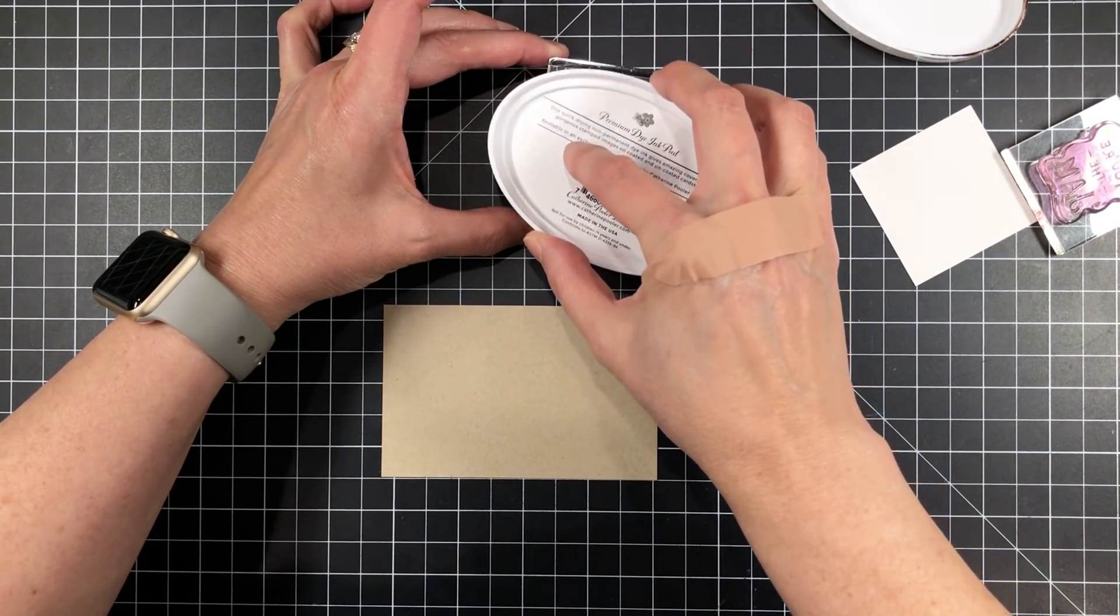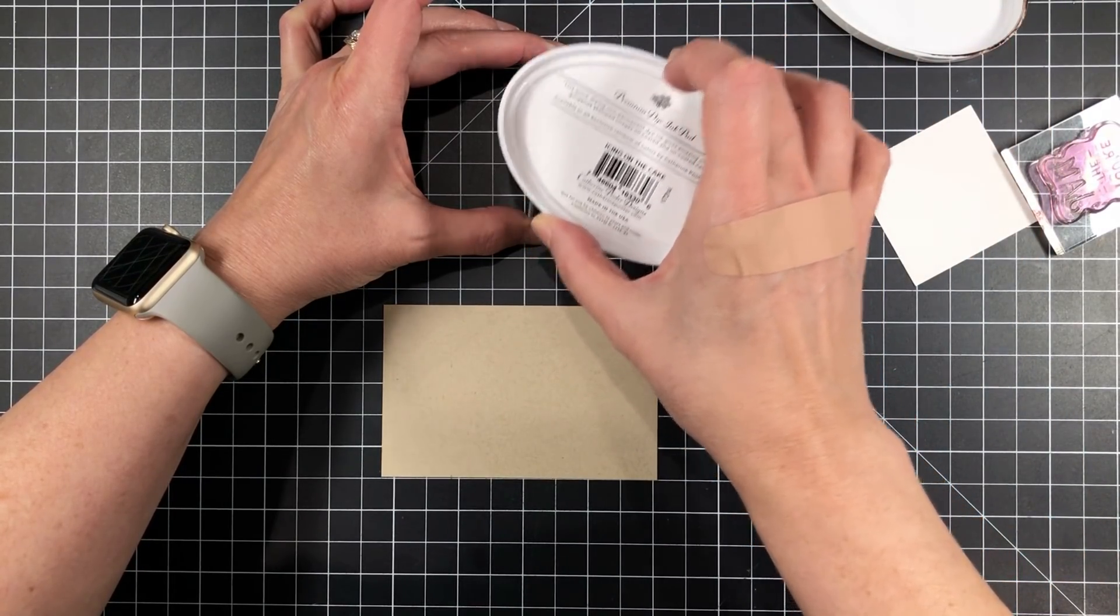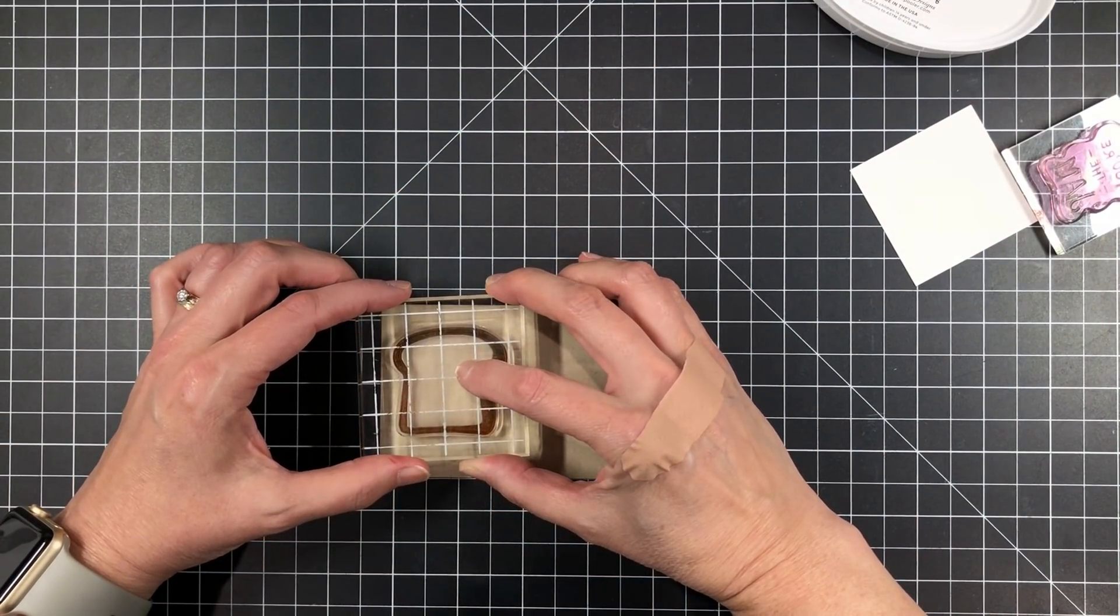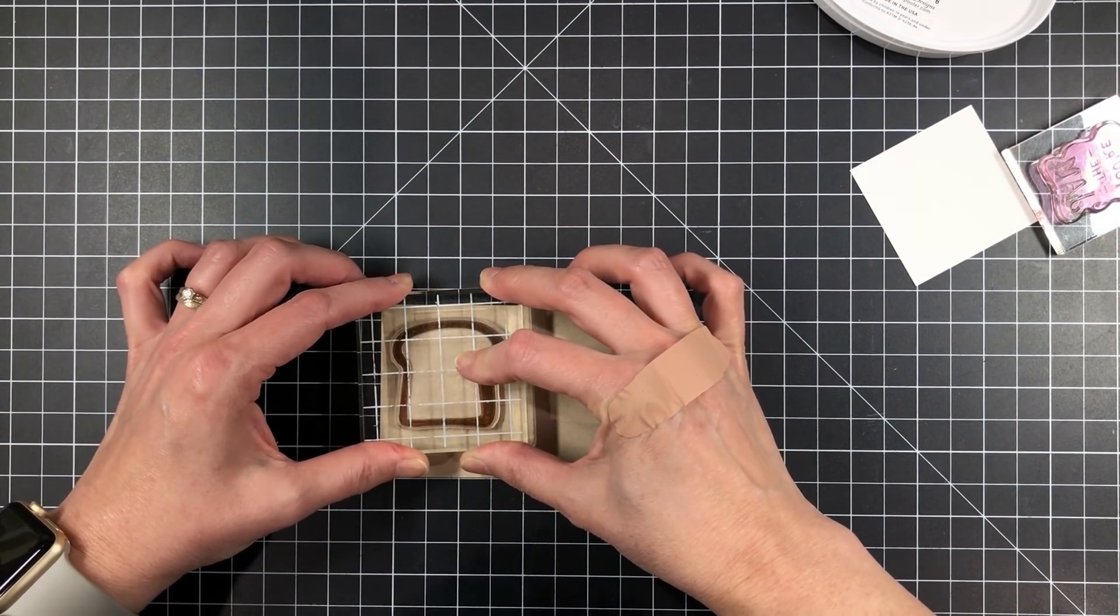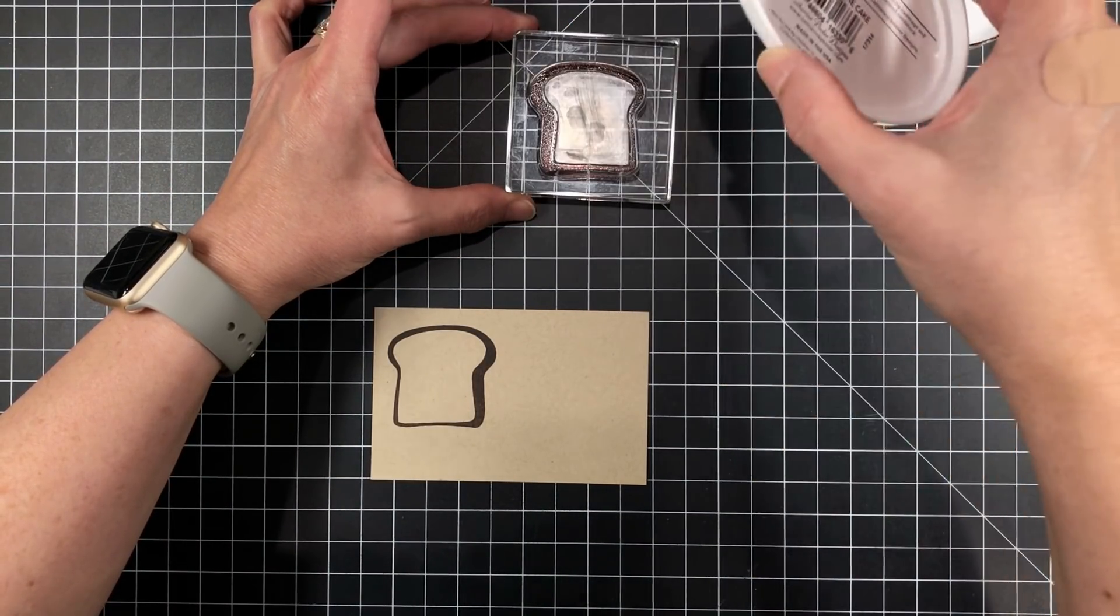So I've taken the bread slice image and mounted that to an acrylic block and I'm working with Catherine Pooler's dye inks for this project. This is icing on the cake. It's a nice, deep, rich brown. And I love the coverage I get with this water-based ink.